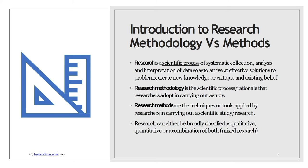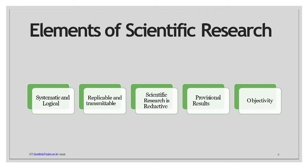Let's move to the second slide and look at the elements of scientific research. I've given you about five key elements, but this is not exhaustive — it is simply a guide as you anticipate commencing your research concept writing, proceeding to the research proposal, going to the field, and then submitting your final research output. The elements of scientific research are the tenets or principles that underpin a research process. The first and very important element is that you must be very logical and systematic.